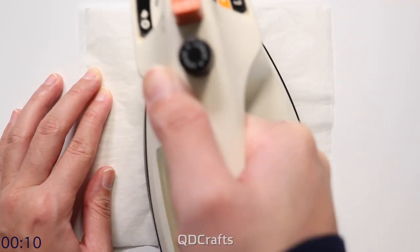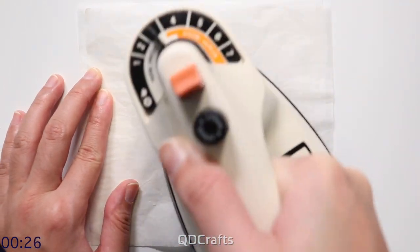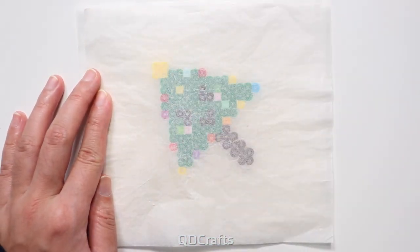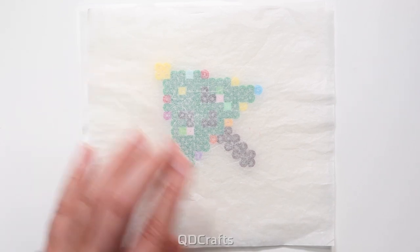Then we do the exact same thing on the other side. I always iron both sides of my perler bead projects and then as it cools you want to leave a heavy book on top so that it'll keep it flat.